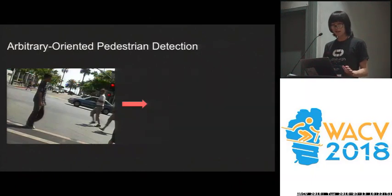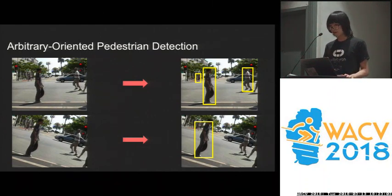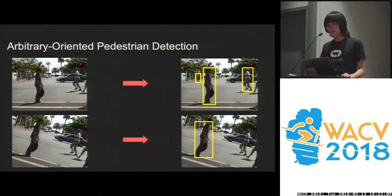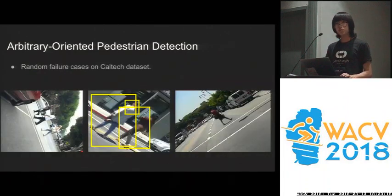Now, what if we rotate the input image and run the same detector? As you can see in the bottom row, even if the detector is exactly the same as before, and we just add a little bit of angle to the input image, it leads to inferior detection performance. The key difference is that the pedestrians are not upright anymore after the rotation. Here are some more example failure cases — when there are no bounding boxes, it means that the detector totally fails.